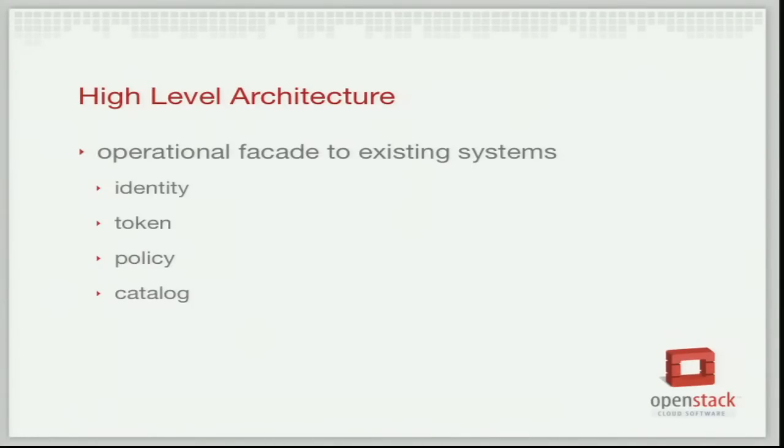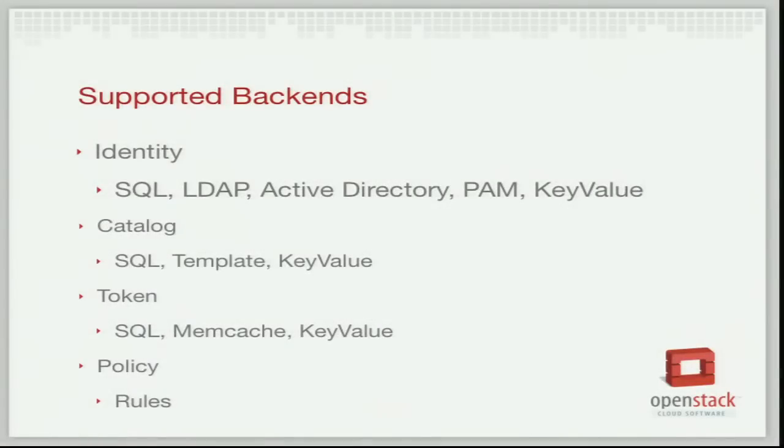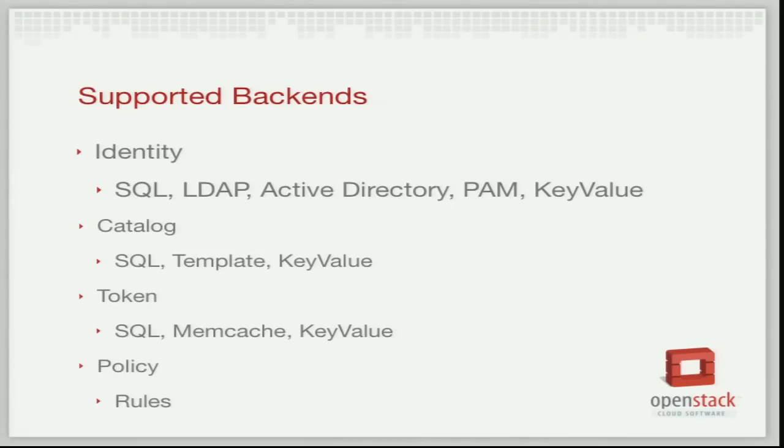Keystone is an operational facade to existing systems, much like Cinder is to your volume systems and Quantum is to network systems. The supported backends today include SQL, LDAP, Active Directory - big asterisk next to that, and a big thank you to the guys at CERN - PAM, and a simple key-value store. For catalog there's a template mechanism or SQL-based backend. For tokens you can use memcache, a random key-value store, or SQL. The Active Directory support does mean you have to configure your Active Directory in specific ways to represent projects, users, and roles as Keystone expects. If you can't modify your schema, there's probably more work to do, but it's a wonderful first step building off Adam's original LDAP support.